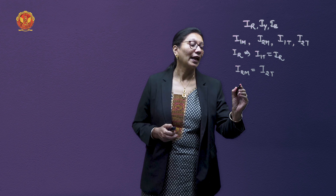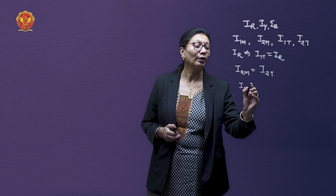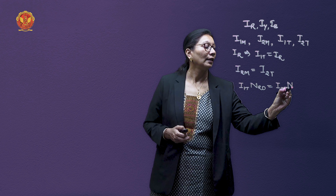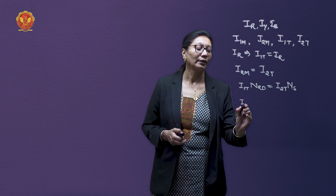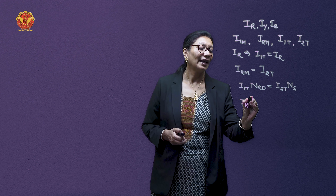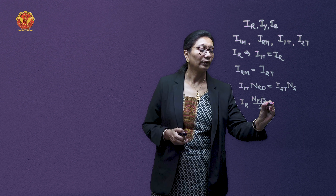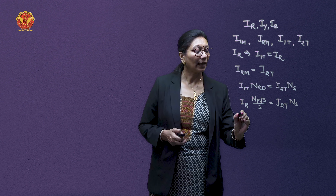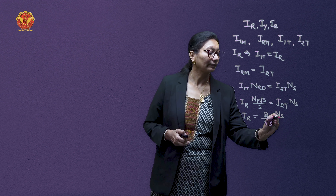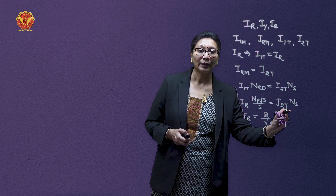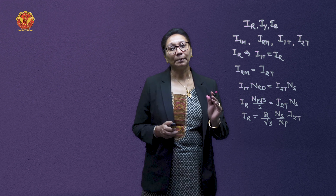From the MMF balance equation for the T's transformer: I1T × NRD = I2T × NS, meaning primary current times number of turns equals secondary current times number of turns. Substituting values — IR × NRD (which is NP × √3/2) = I2T × NS — we can derive the phase current as IR = (2/√3) × (NS/NP) × I2T.